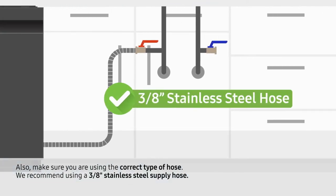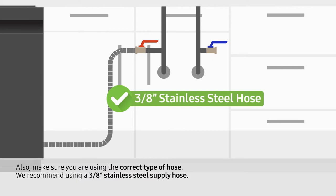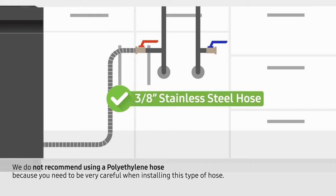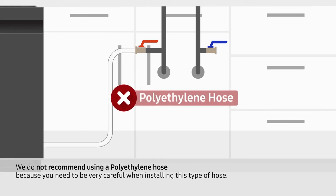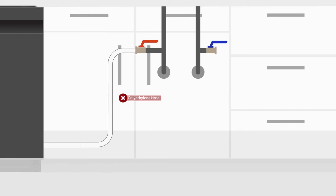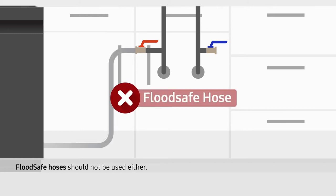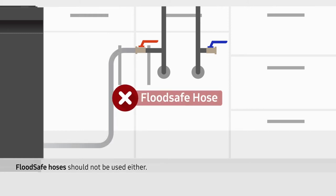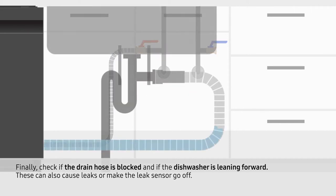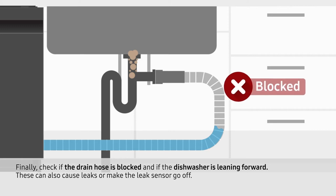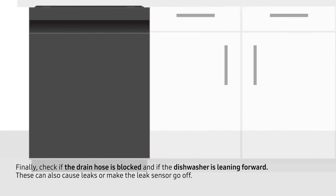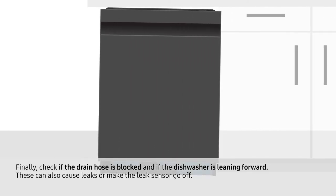Also, make sure you are using the correct type of hose. We recommend using a 3 1/8 inch stainless steel supply hose. We do not recommend using a polyethylene hose because you need to be very careful when installing this type of hose. Flood-safe hoses should not be used either. Finally, check if the drain hose is blocked and if the dishwasher is leaning forward, as these can also cause leaks or make the leak sensor go off.